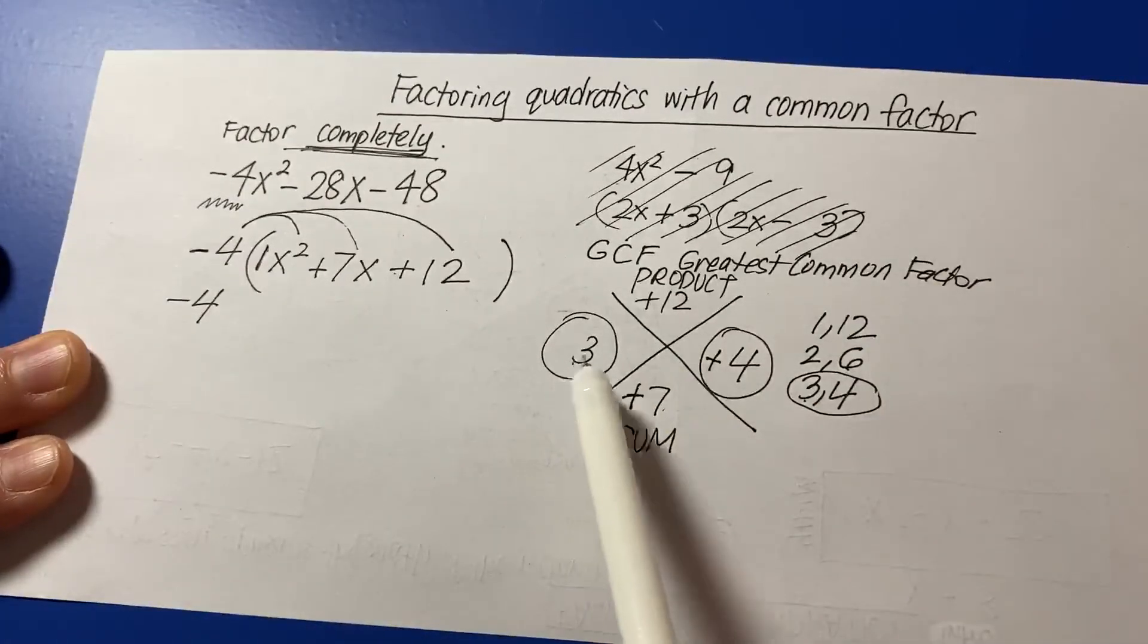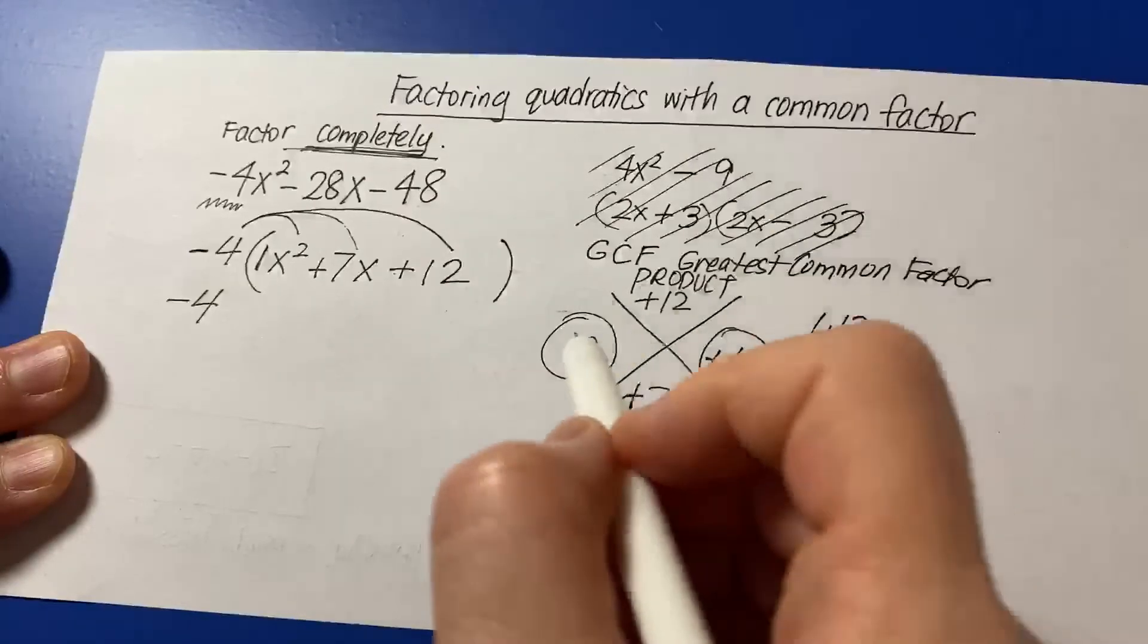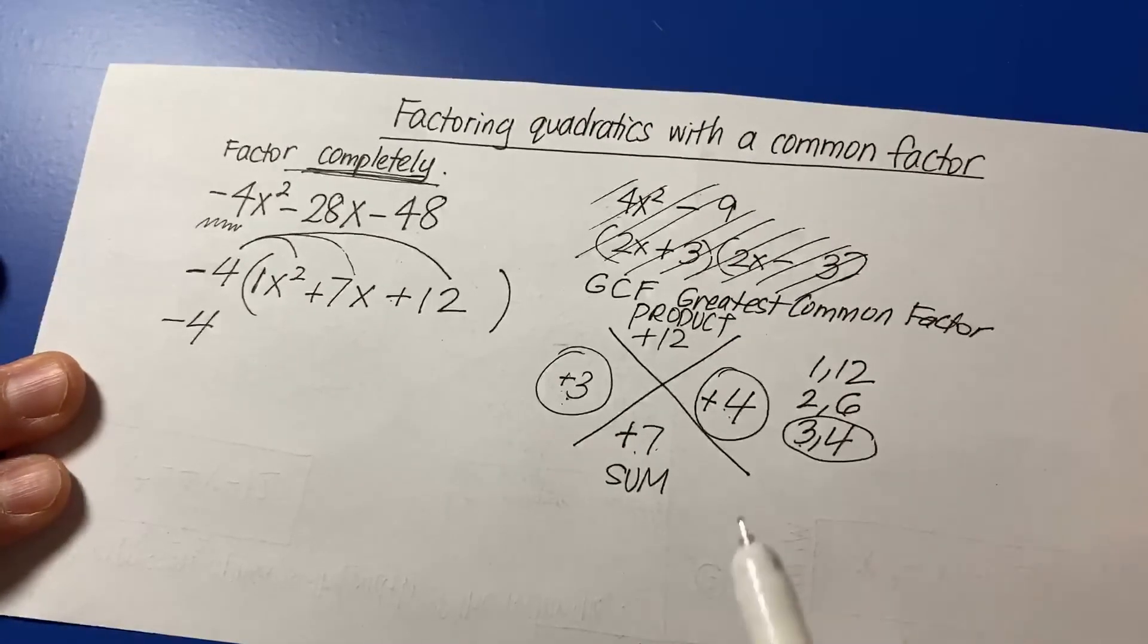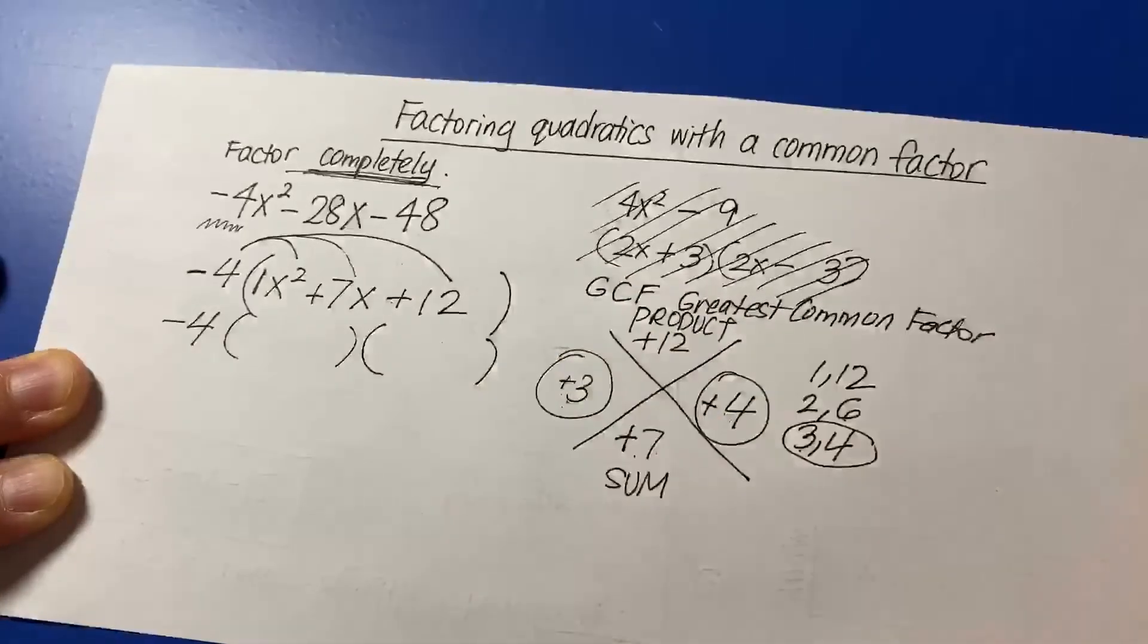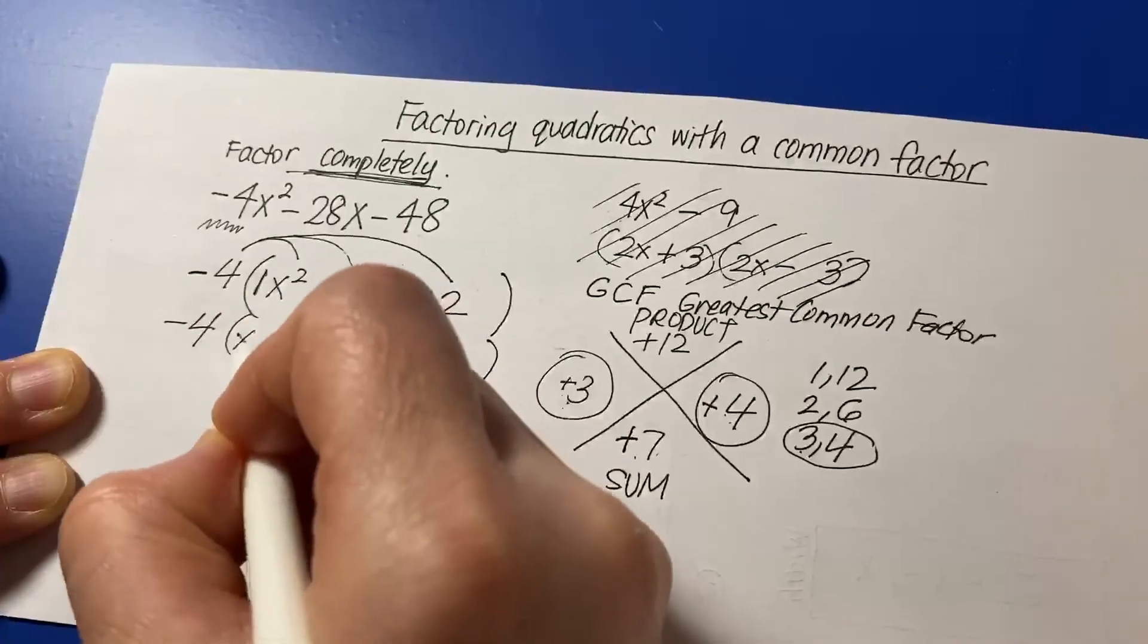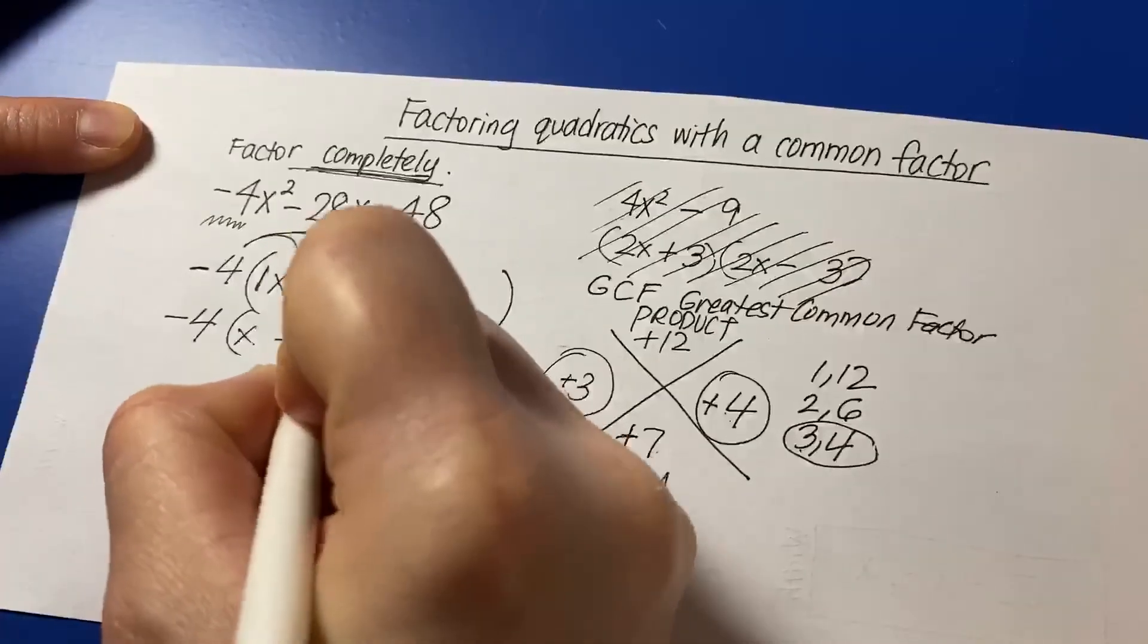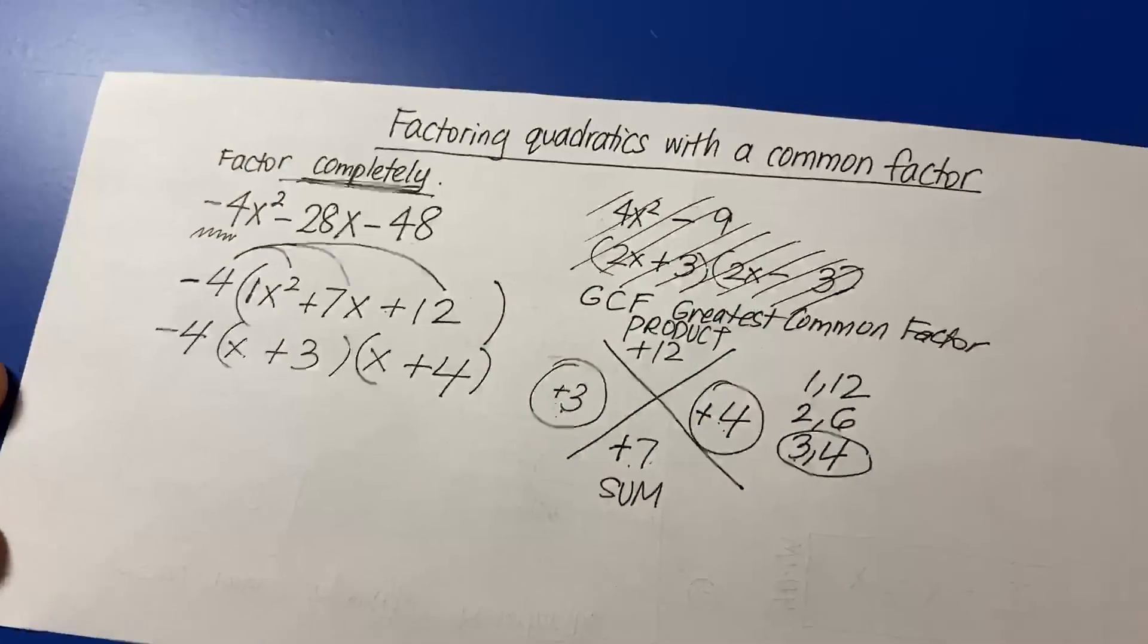Now, also check, do these two numbers multiply to give you a positive 12? Absolutely. And do these two numbers add to give you positive 7? Sure it does. So now let's set up the factors. So what to multiply to give me x squared? x times x. And then what do we get from the x factor? Plus 3 and plus 4.